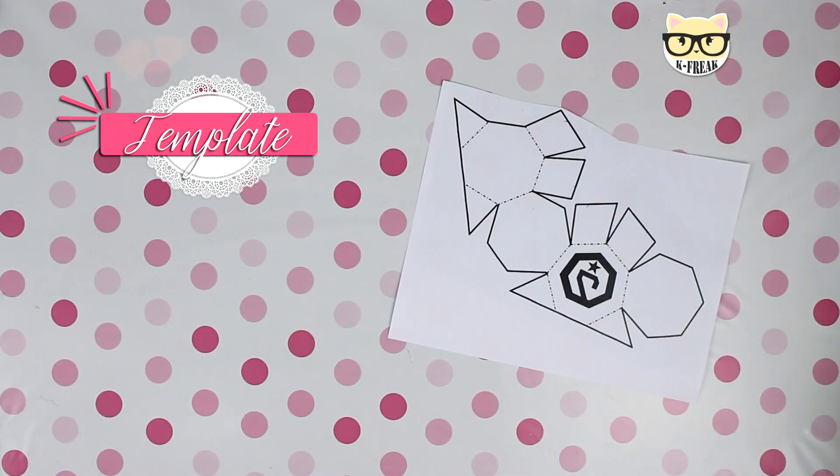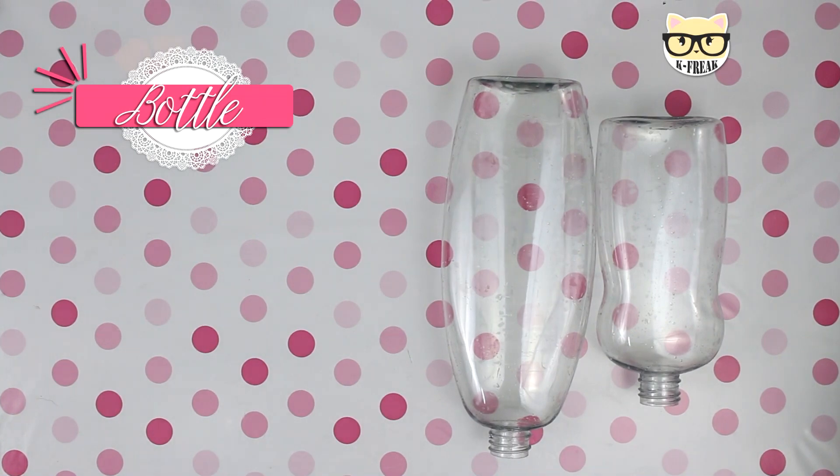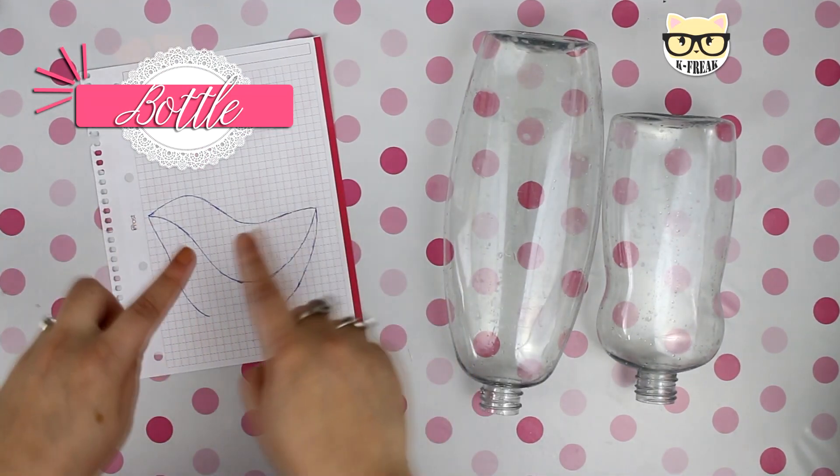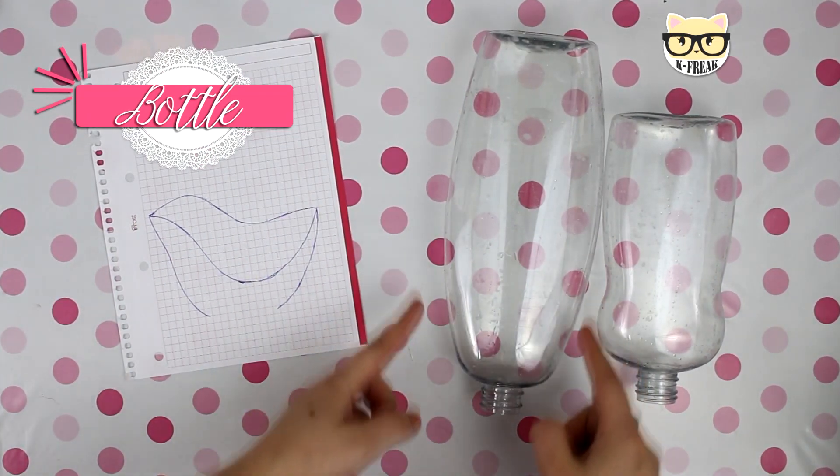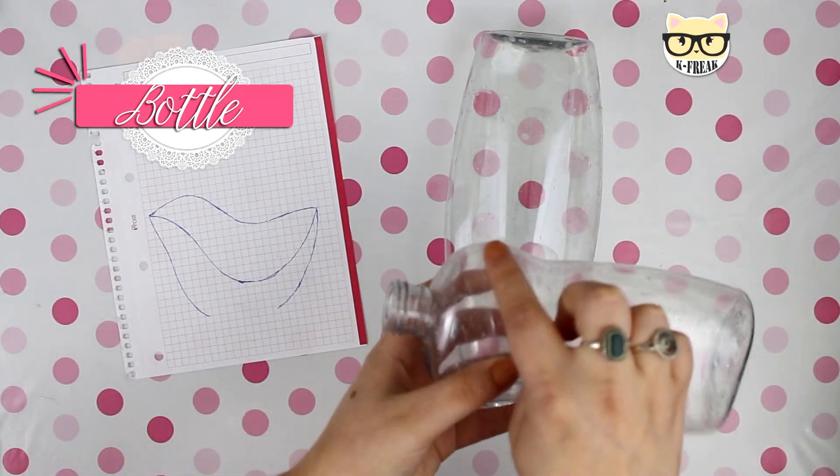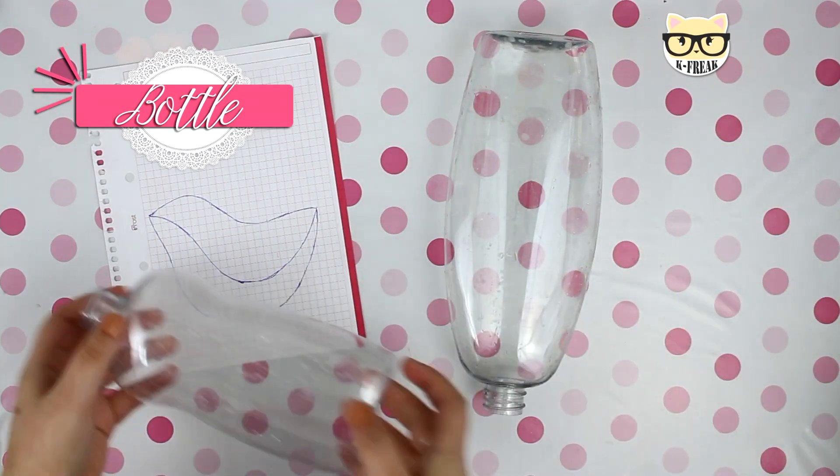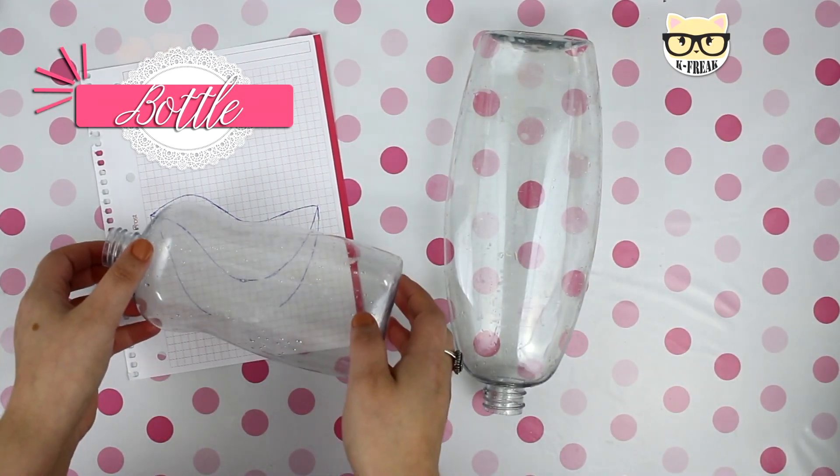An acetate sheet, some green tissue paper, the template that I'll be leaving in the description box. I handmade it so maybe you have to play with it a little bit so everything fits together. And the most important: two empty bottles, clear bottles. One of them has to have this U-shape that will be the bottom part, and the other one has to have this S or curve that will be like the top part of the green bird.